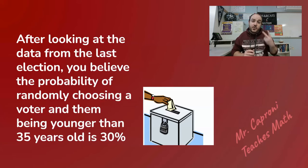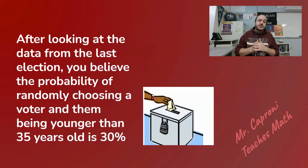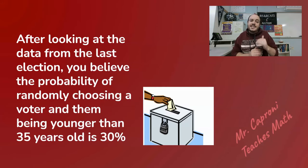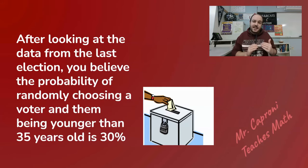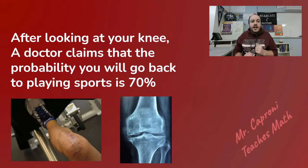Let's look at some examples. The first one says: after looking at the data from the last election, you believe the probability of randomly choosing a voter younger than 35 years old is 30 percent. What type of probability is this? Hopefully you said empirical — because it says it is based on data from the last election. This is not a professional opinion; it is strictly coming from data we collected from a previous situation.